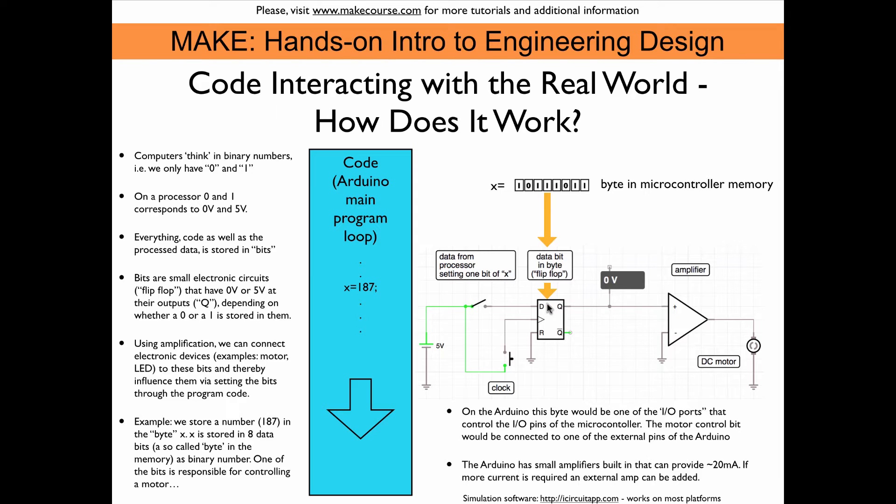Since these ones and zeros that we have in the code and in the data correspond to zero and five volts, of course we can translate the voltage at the output here, the one or the zero, that is being remembered into a real-world activity if we connect an amplifier to this output. And this amplifier then can turn on a motor, for example, as here shown in this schematic. So in this particular example, I assume we have the Arduino code running on the microcontroller. So we call that the main programming loop, the main program loop. And so at some point, let's say we define the variable X as 187.